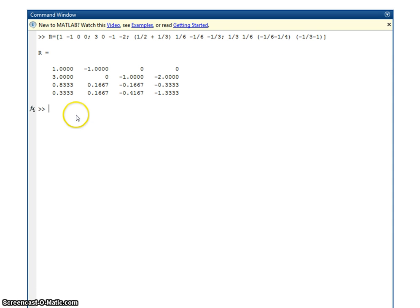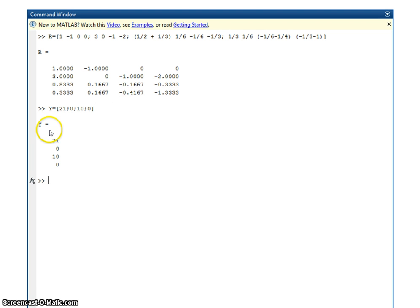Now, let's enter the voltage matrix on the right-hand side. Oh, sorry, the Y matrix on the right-hand side. So we get Y is 21, 0, 10, 0. So this is a column matrix because it's separated by semicolons. So I get Y.